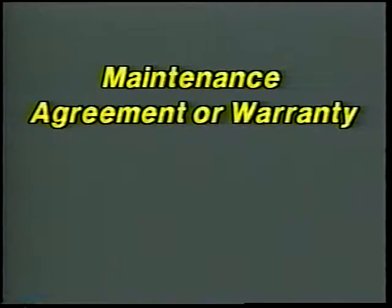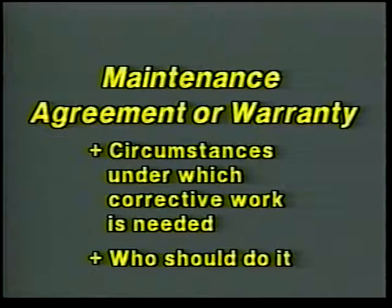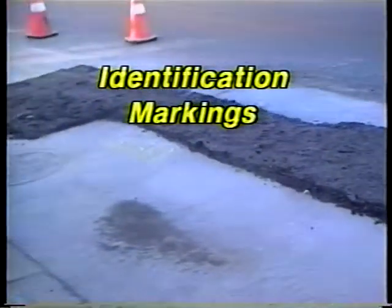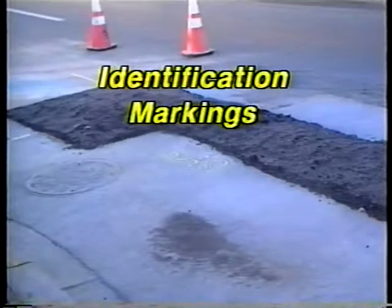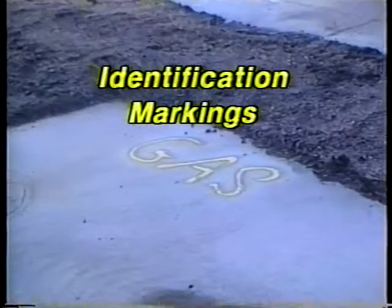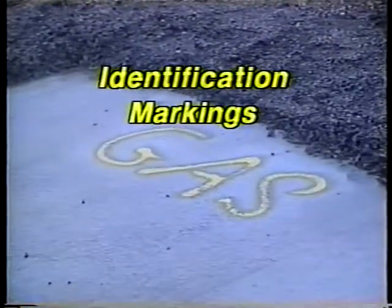Another means used by some agencies is a one-year maintenance agreement or warranty. Typically, these stipulate the circumstances under which corrective work is needed and indicate who should do it. Utility identification markings are also a good idea. The agency should have each utility paint its company ID in the proper color code on the curb or pavement next to the patch and maintain it there for one year. This way, the agency will know who is responsible for any settlement or failure.